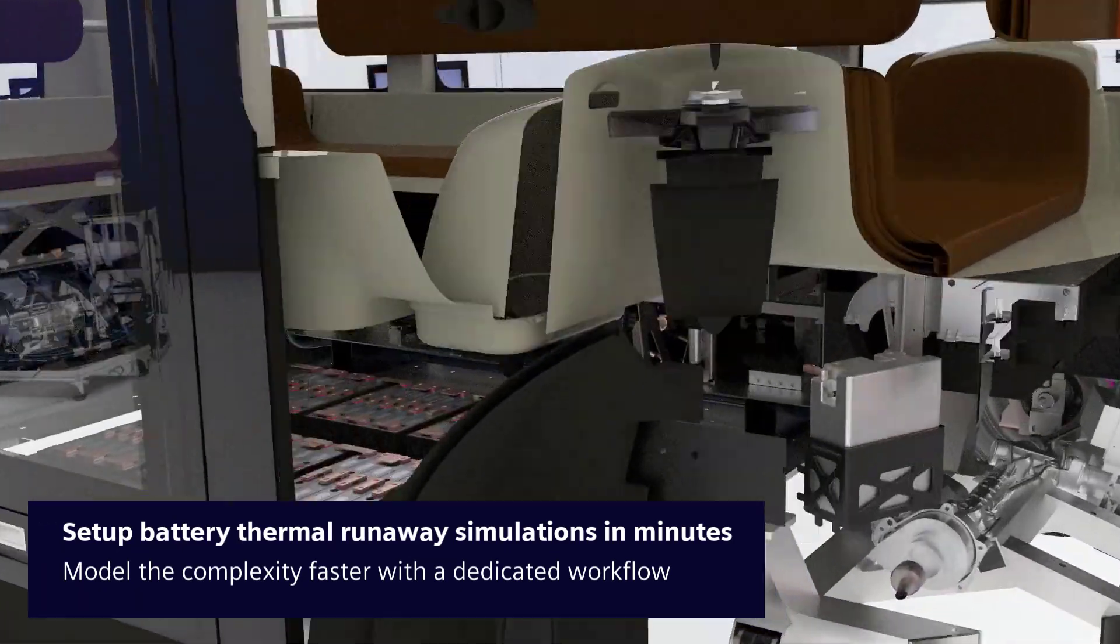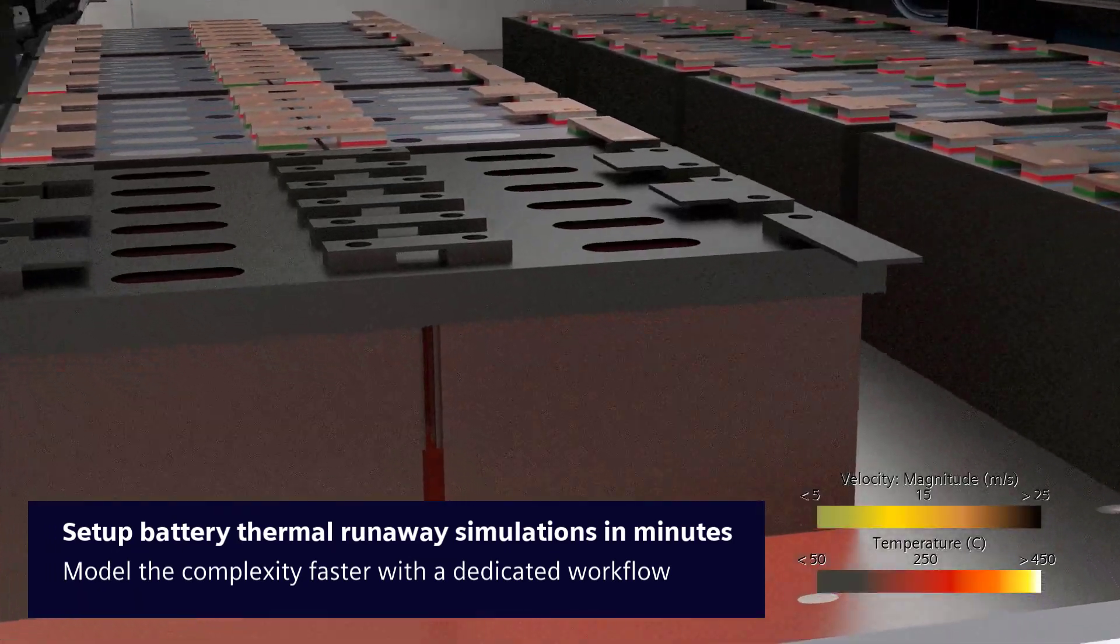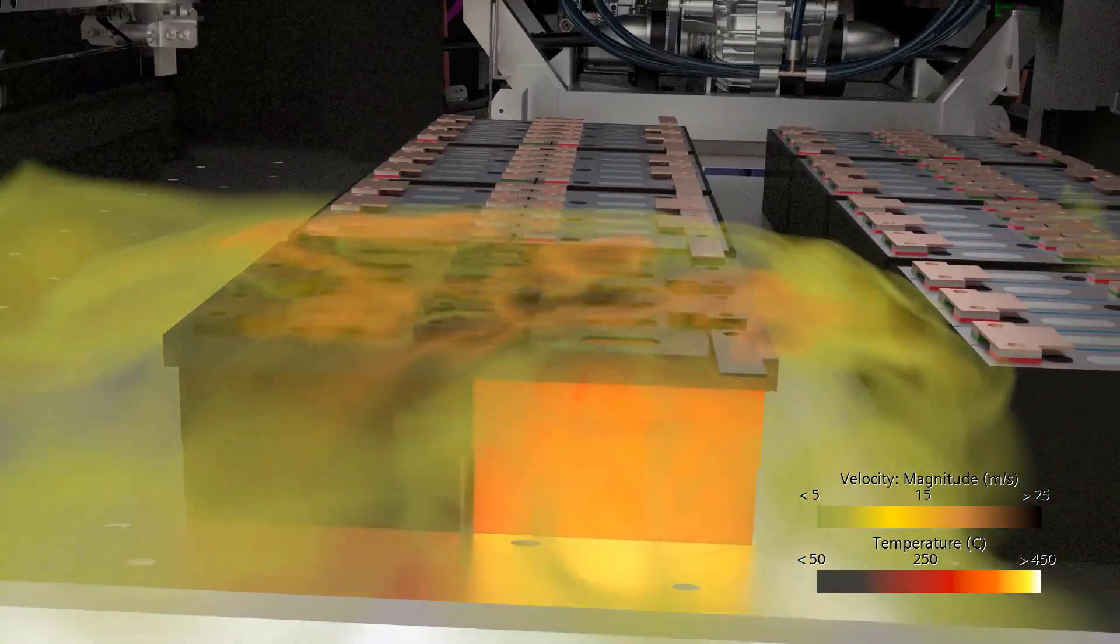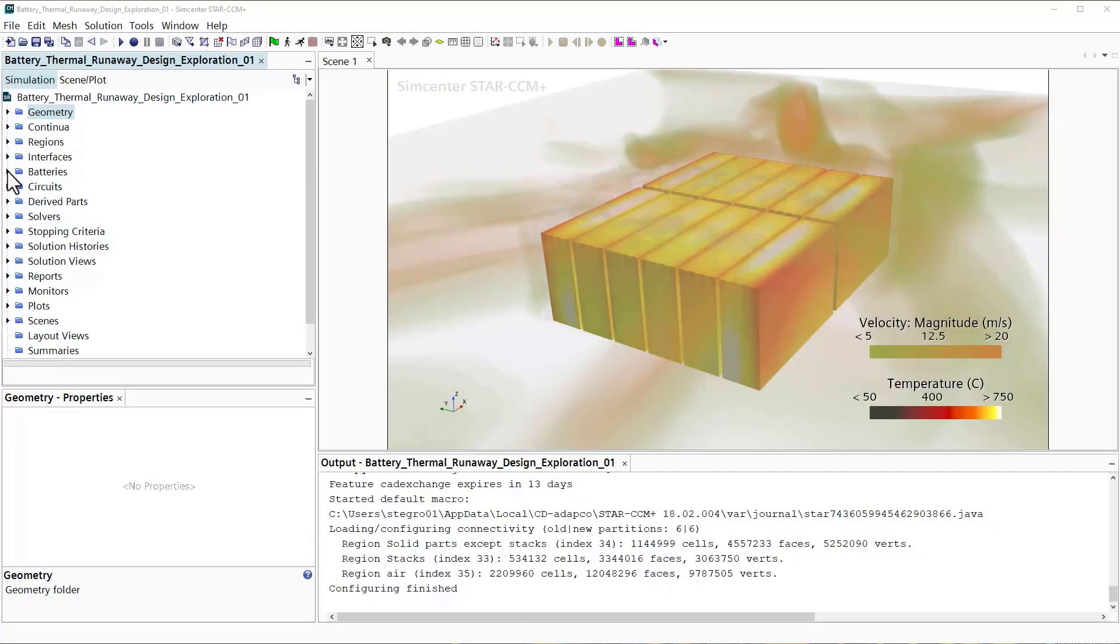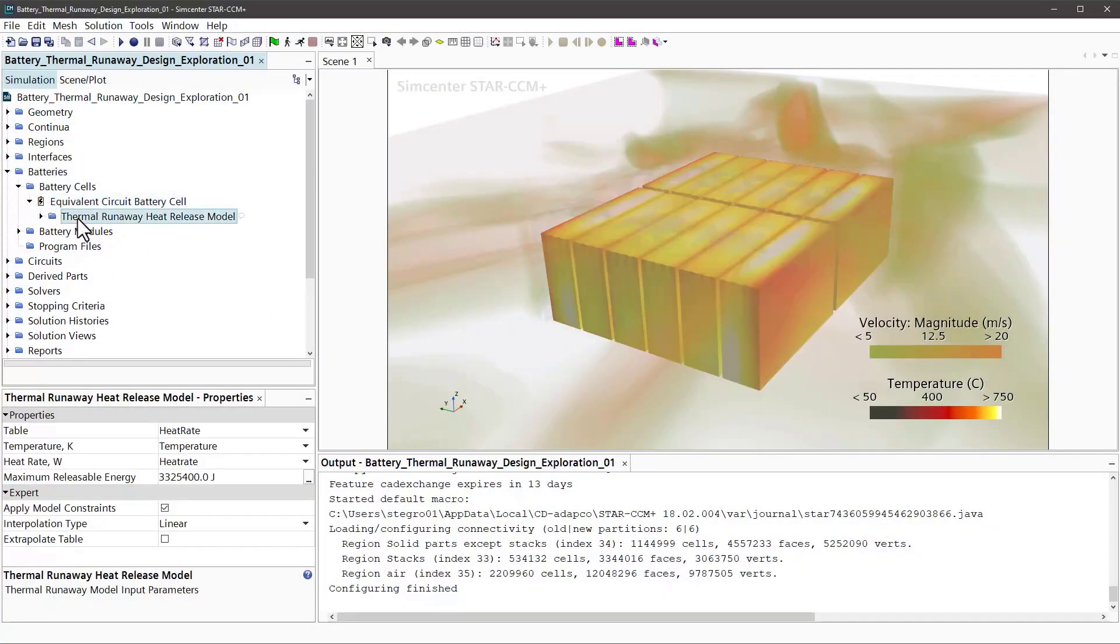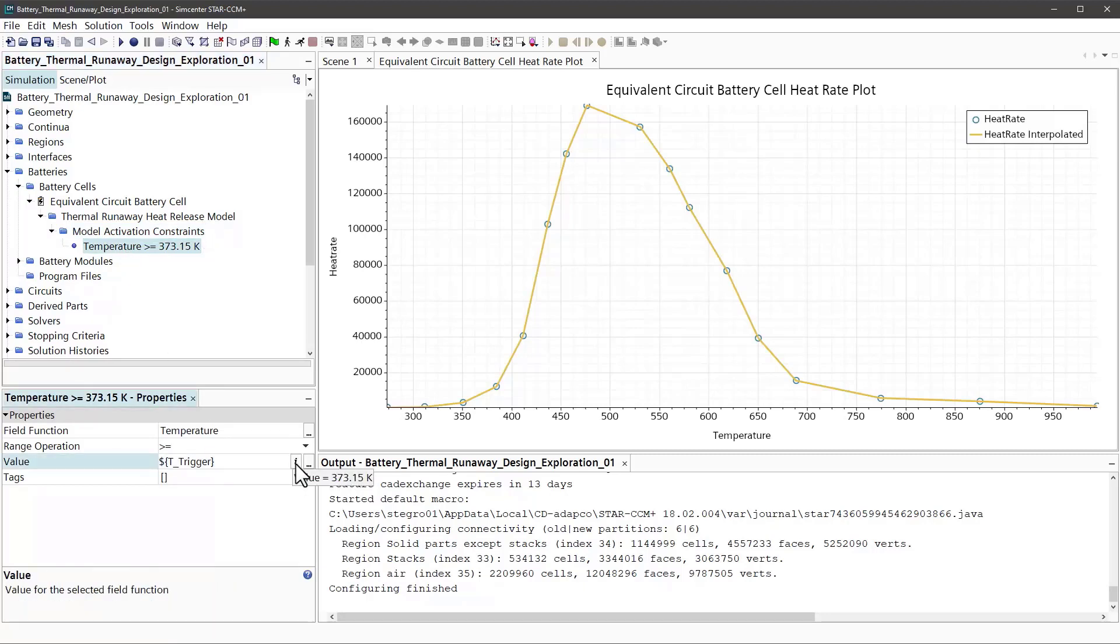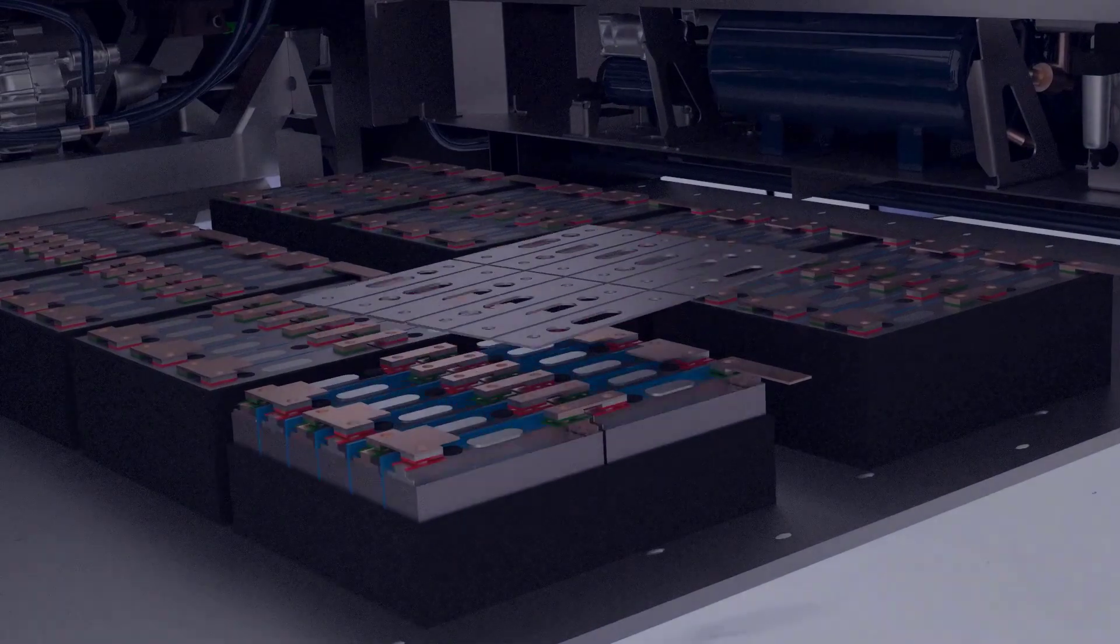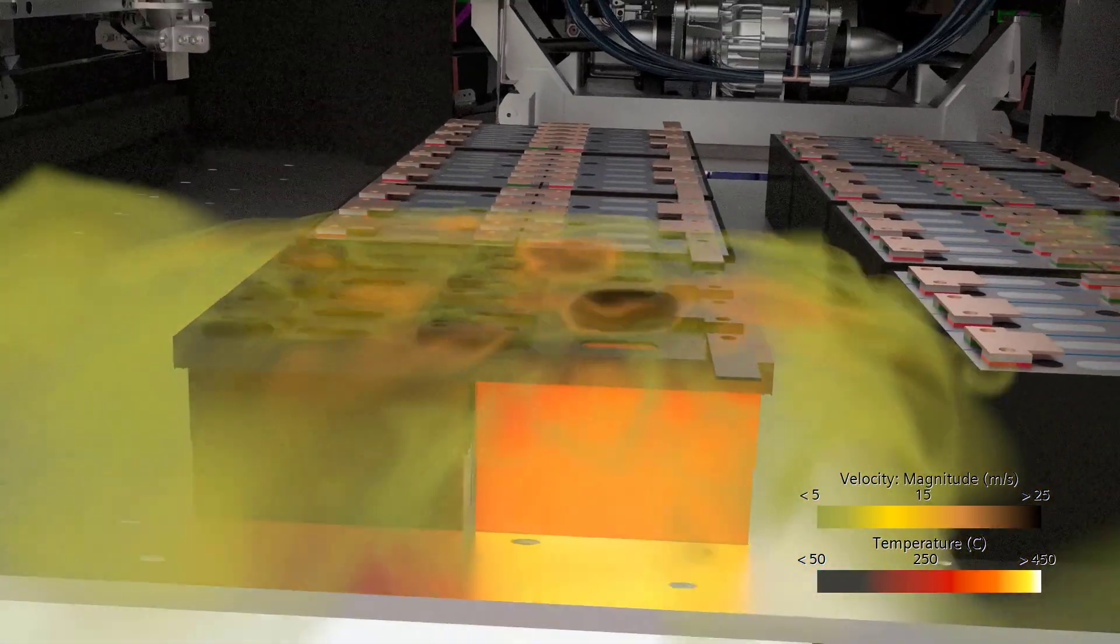To drive battery safety and ensure certification while mitigating expensive and time-consuming tests, CFD simulation is a key technology. In Simcenter Stasis Mplus 2302 we release a dedicated workflow to accelerate the setup time of thermal runaway simulations for batteries from hours to minutes. As part of the batteries add-on, the workflow allows you to handle large packs and exothermal heat release with ease, retaining high modeling fidelity.